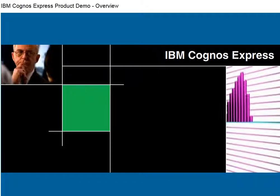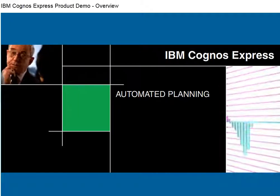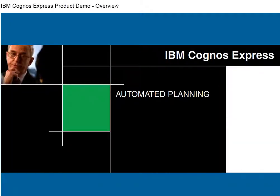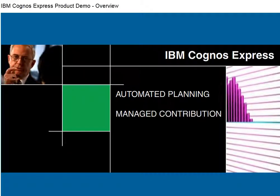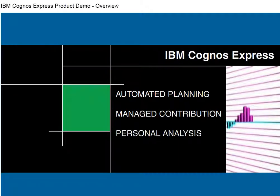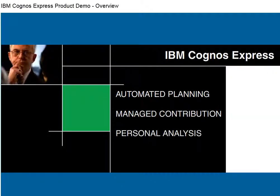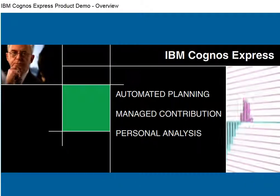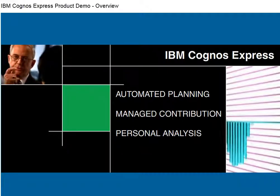IBM Cognos Express automates the planning, budgeting, and forecasting processes throughout your company. It provides a managed contribution model and workflow to streamline information gathering, aggregation, and analysis. It transforms a company's planning processes, enabling business users to react quickly to changing business conditions and to grow their business effectively.